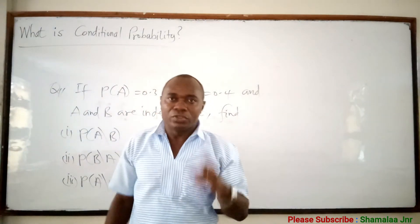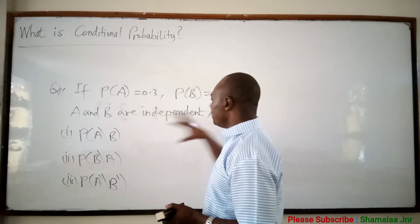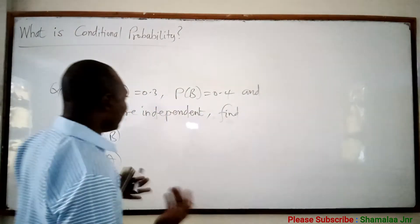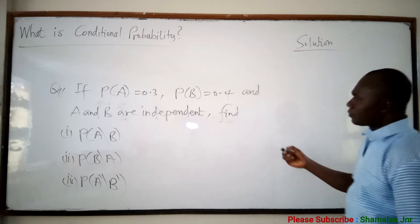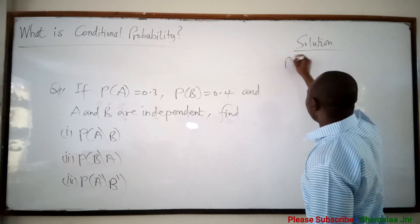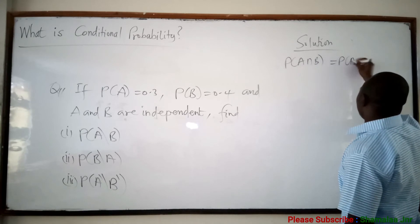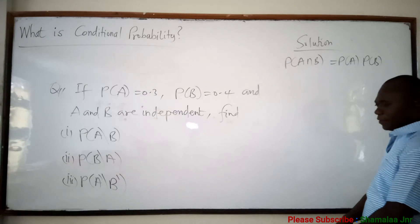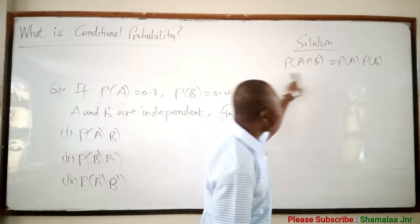Viewers, I have a video on introduction to probability where I explained independent events. When you say that two events A and B are independent, the probability of A and B is equal to the probability of A times the probability of B. So two events A and B are said to be independent if this holds.